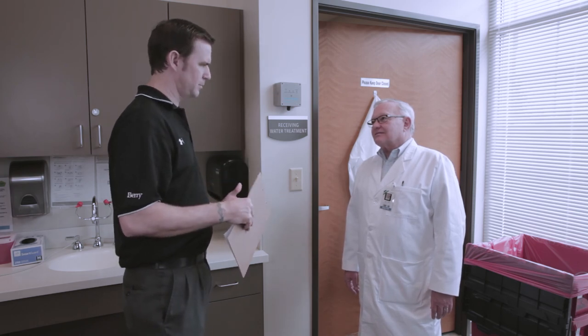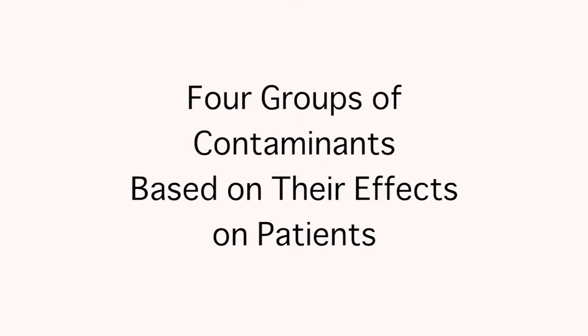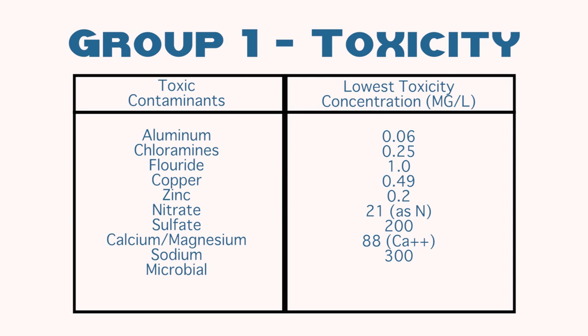Before we go in, could you give me some insight into why water is so important for the dialysis process? Water is probably one of the most important parts of the dialysis process. There are a lot of possible contaminants in tap water that could affect patients immensely. There are four groups of things that are an issue in a dialysis center. The first are things that cause toxicity — things like chloramines cause hemolysis of the blood, aluminum causes brain damage, fluorides, zinc, and nitrates.